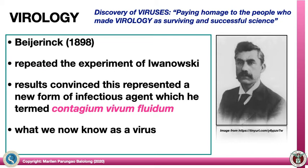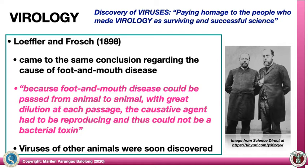However, Iwanoski was not so convinced with his findings. So Bejerink, in 1898, tried to repeat this experiment and his results convinced him, representing a new form of infectious agent, which he termed contagium vivum fluidum — what we now know as the virus. Also in 1898, Loffler and Frosch came to the same conclusion regarding the cause of foot and mouth disease. Because foot and mouth disease could be passed from animal to animal with great dilution at each passage, the causative agent had to be reproducing and thus could not be a bacterial toxin. This marks the start of animal virus discovery.